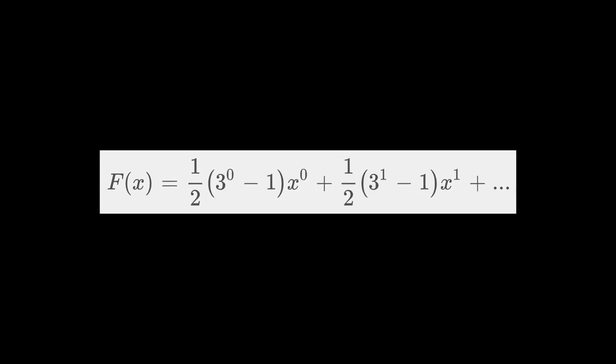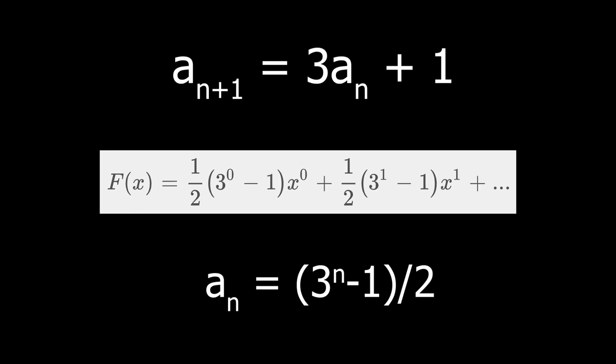In this function, each coefficient is in the form 3 to the n minus 1 divided by 2. So our general term for the sequence a_{n+1} equals 3aₙ plus 1 is aₙ equals to 3 to the n minus 1 divided by 2.